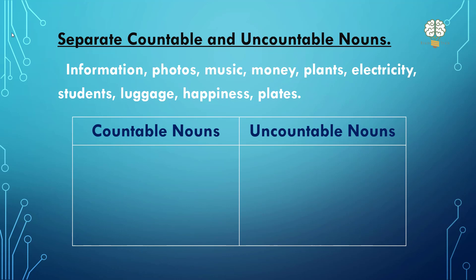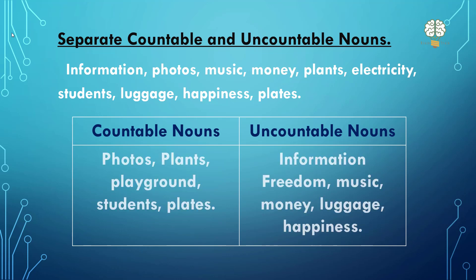Just try. Watch the previous video again — the one where we explained — and then see if you can identify. Okay, so these are the answers. Countable: photos, plants, students, and plates. These are countable. And uncountable: information, music, money, luggage, happiness. You cannot count these — they are your uncountable ones.